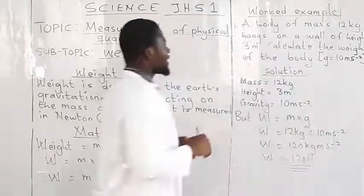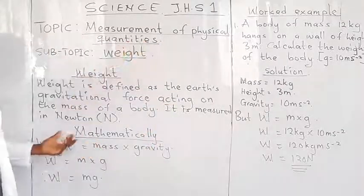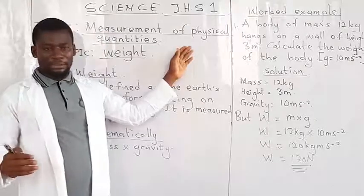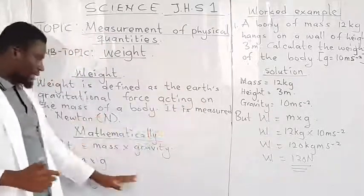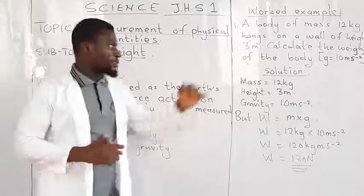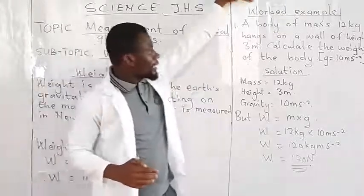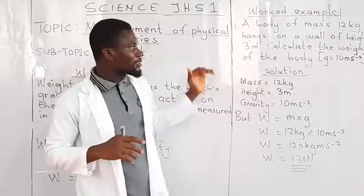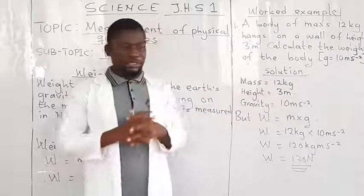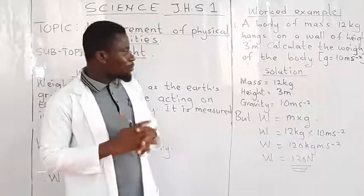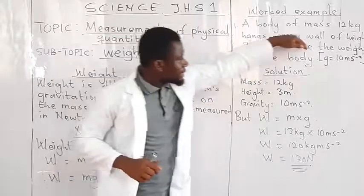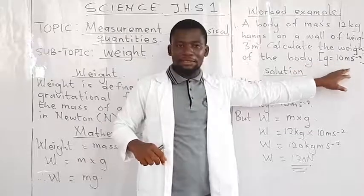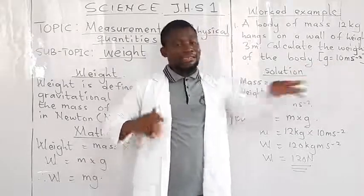Now, let's look at an example. This is what we normally do when it comes to physics. Any time you look at a formula, we give you sample questions to try. And this is an example. It reads: A body of mass 12 kilograms hangs on a wall of height 3 meters. Calculate the weight of the body.